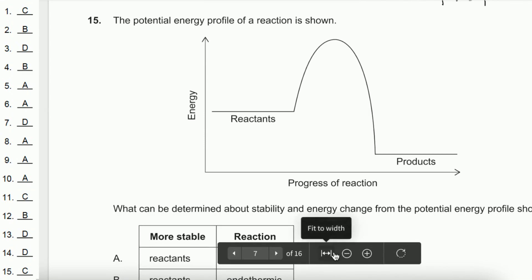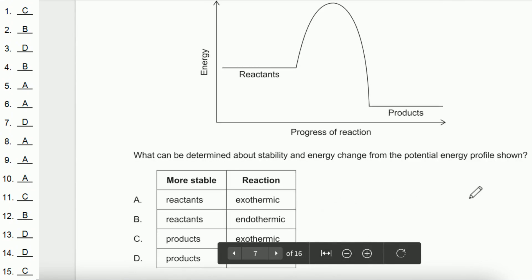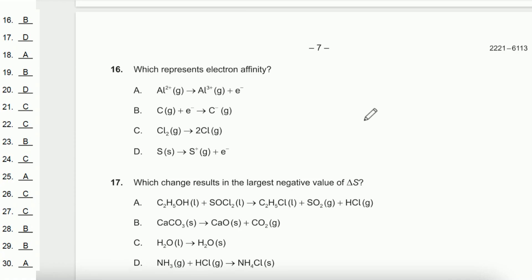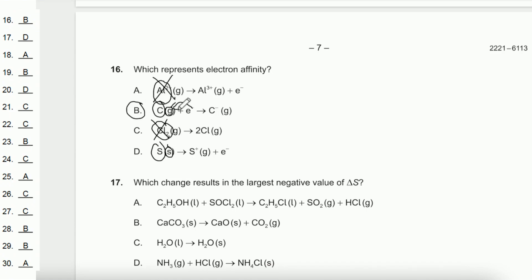Question 15: What can be determined about stability and energy changes from the potential energy profile? If enthalpy is low, the species is more stable, so products are more stable. Enthalpy decreases — delta H is negative — meaning the reaction is exothermic. The answer is C. Question 16: Which equation represents electron affinity? Electron affinity means adding an electron to a gaseous atom. The correct option shows a gaseous atom gaining an electron to become a negative ion. The answer is B.